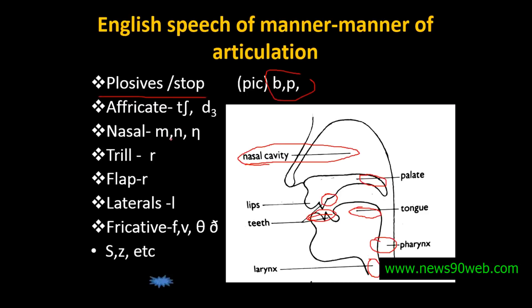Nasals — m, n, ng. These nasal sounds come out through the nose. If you close the nose, you cannot get the nasal sound. These three are called nasals. Trill — r. Flap — r. Laterals — l. Fricatives — f, v, th, s, z, sh, and the remaining. These are called fricatives.